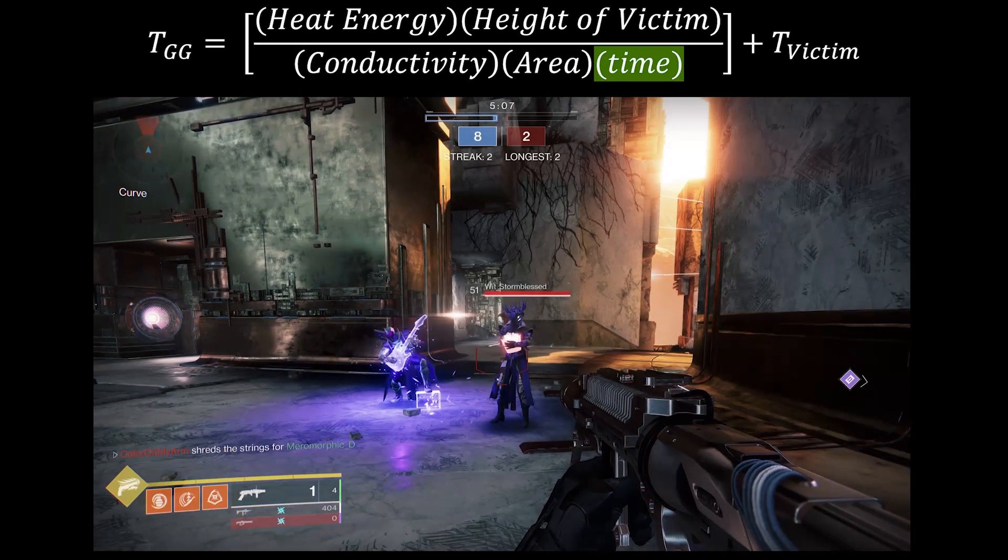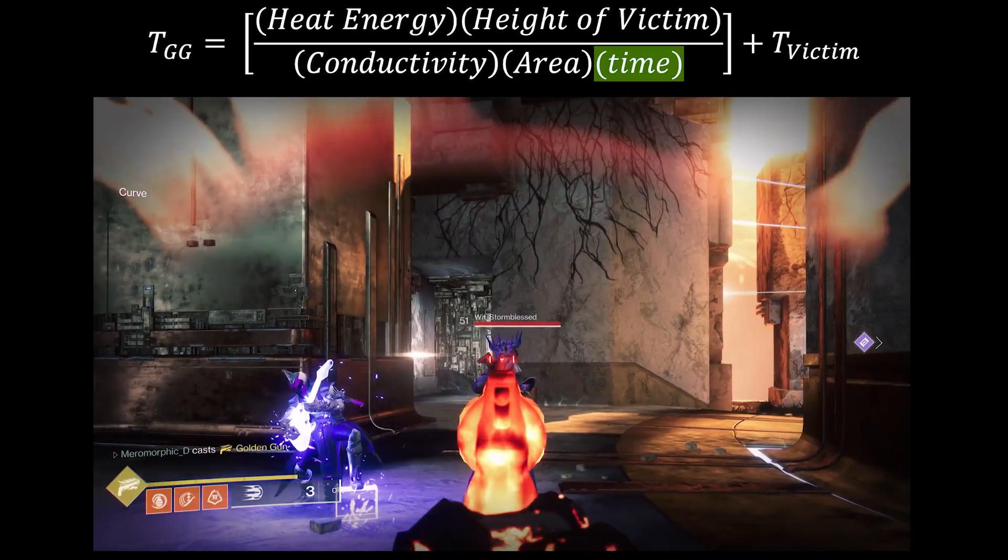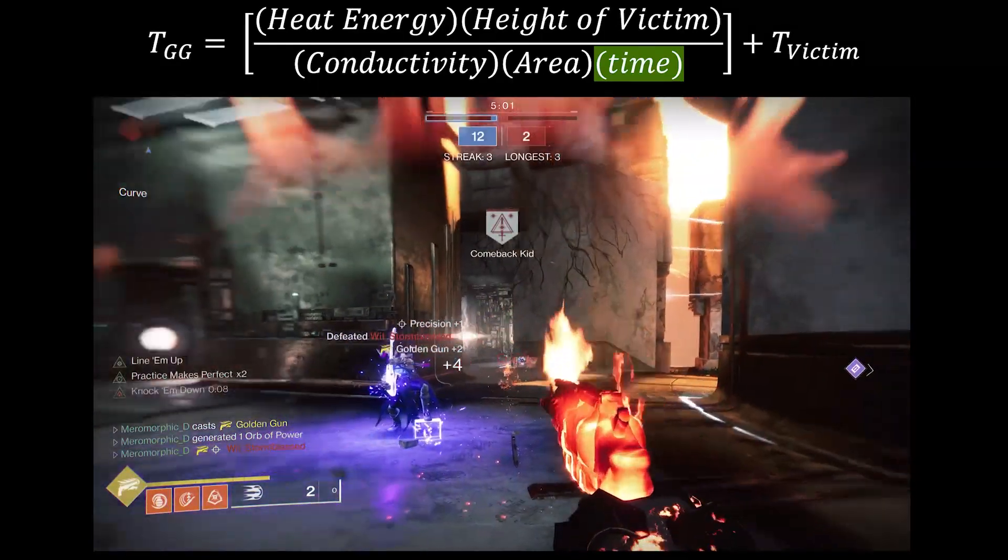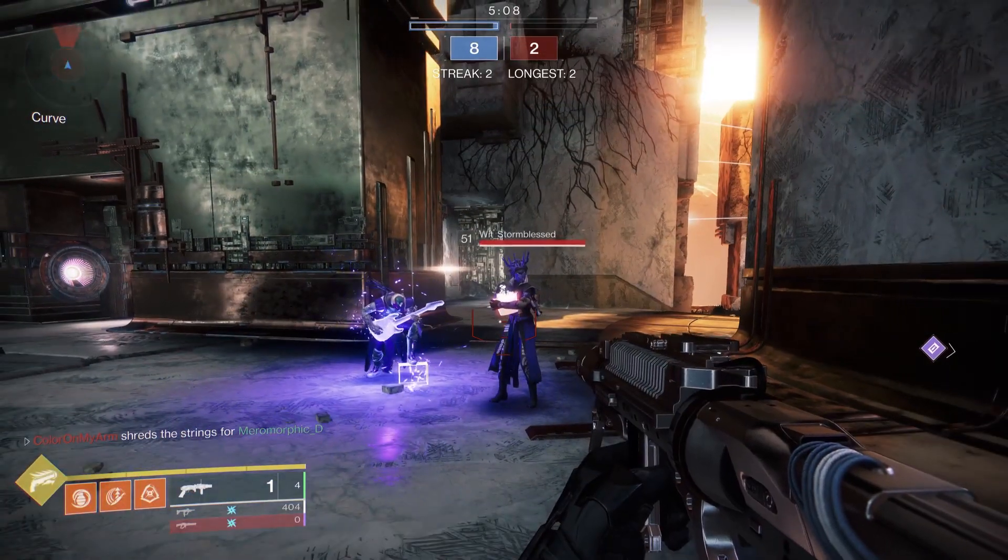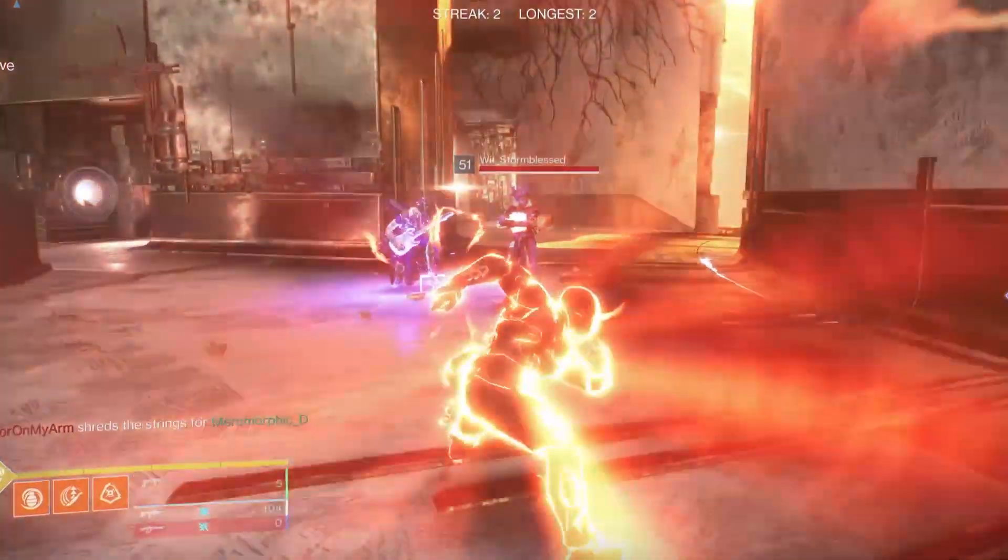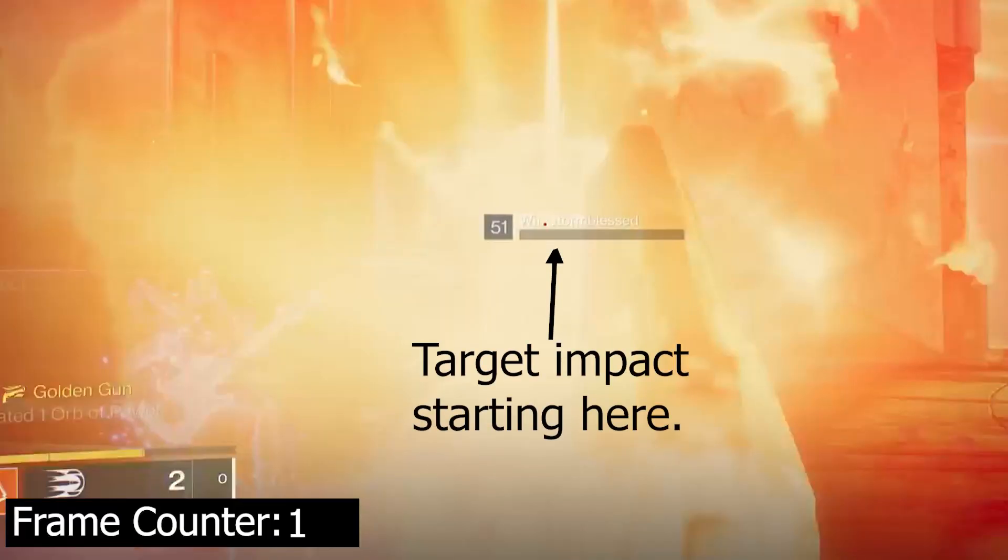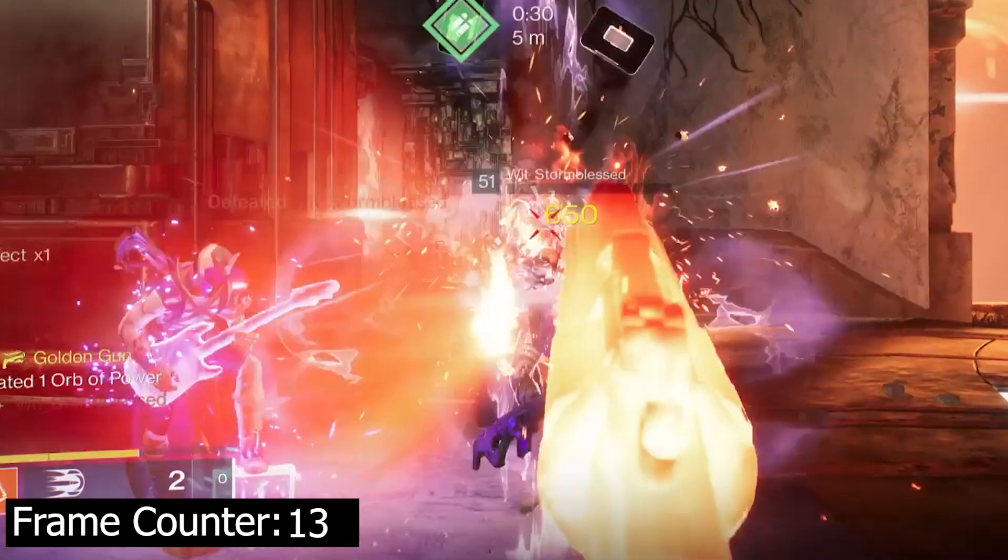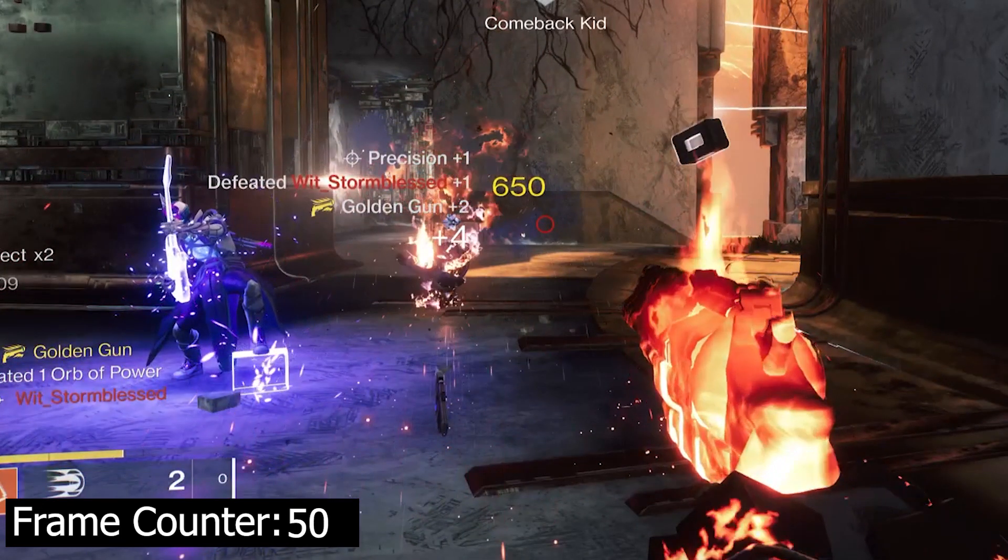Next, we need to find the time it actually takes, in-game, to completely vaporize a guardian. So, I bribed a couple of friends to go into a private match with me to let me shoot them in their dumb faces. For science. As you can see, at the exact moment of impact, their health bar goes to zero. So, we can use that as our starting point. From there, it took about 103 frames for him to basically disappear.